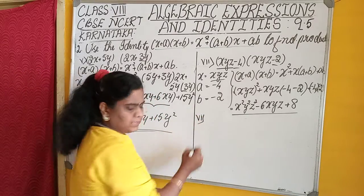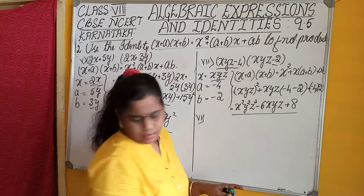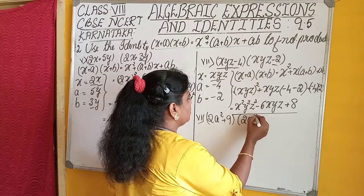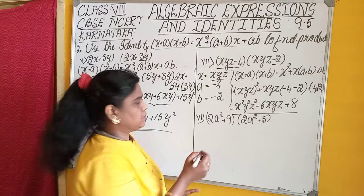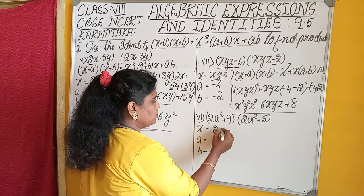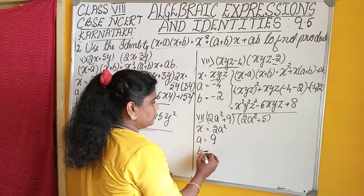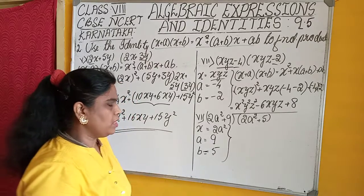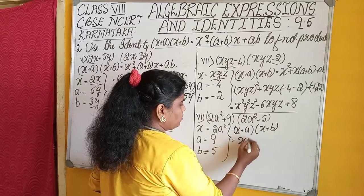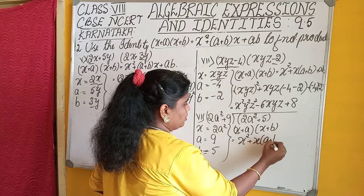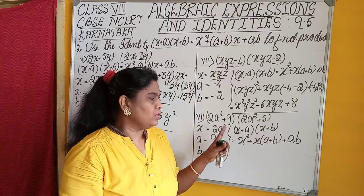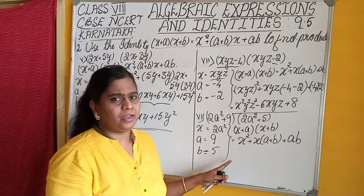Next, let us do the sixth problem: (2a²+9)(2a²+5). Write the values of x, a, and b. The value of x is 2a², the value of a is plus 9, and the value of b is equal to plus 5. Now substituting these values in the identity: (x+a)(x+b) = x² + x(a+b) + a·b.